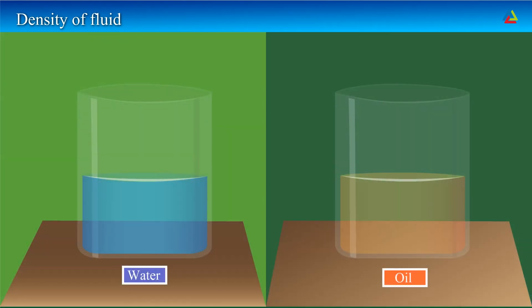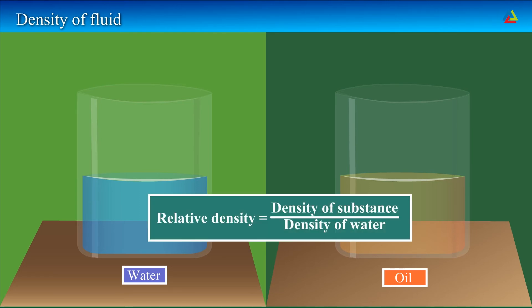What is relative density, dad? Density of a substance is mass of unit volume. Sometimes density can be compared with water. Relative density is the ratio of density of a substance to the density of water. Since the relative density is a ratio of similar quantities, it has no unit.